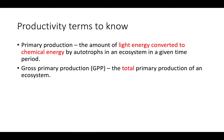Gross primary production is the total primary production of an ecosystem. If we take the primary production of an entire ecosystem and total up all of those values, that gives us our gross primary production.